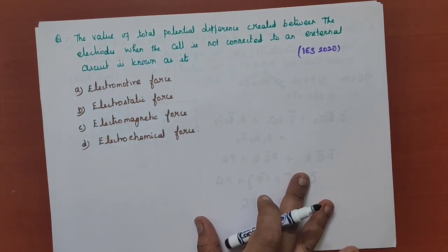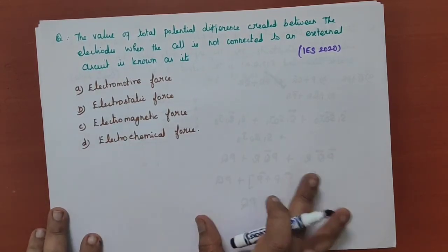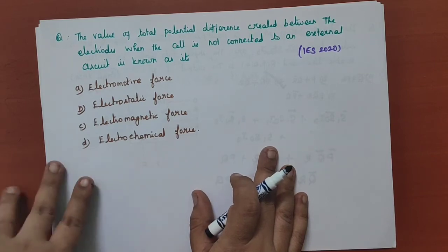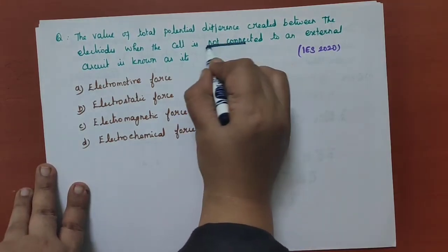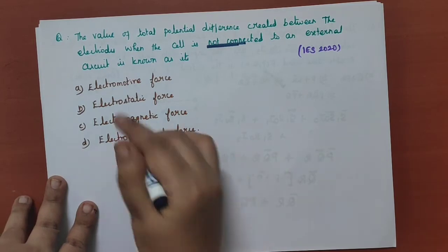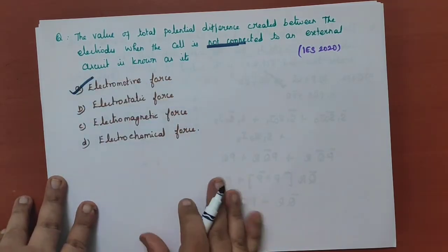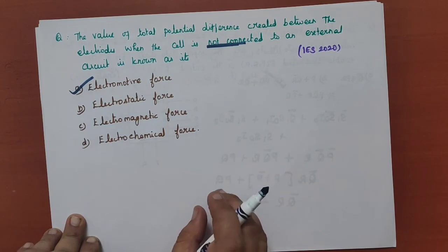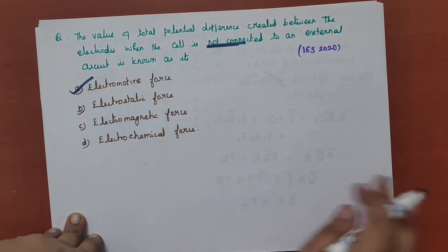The total potential difference created between the electrodes when the cell is not connected to an external circuit is known as the electromotive force. Electromotive force is the electrical action produced by a non-electrical source.